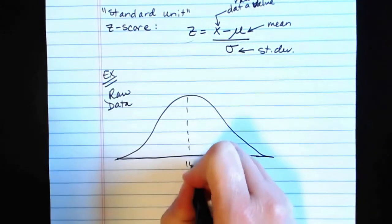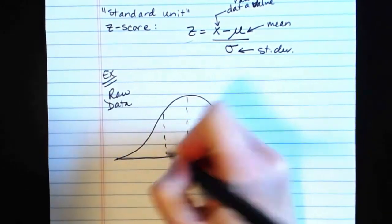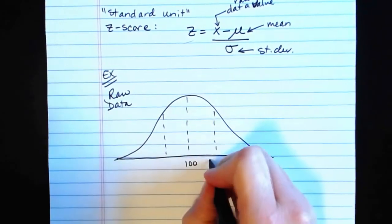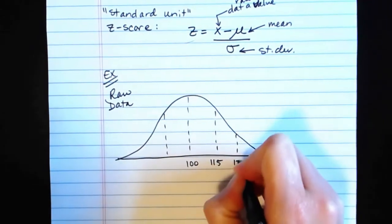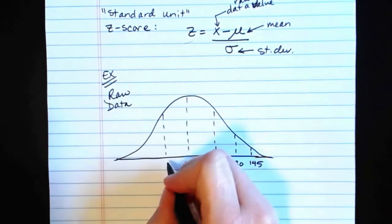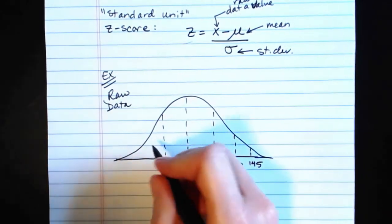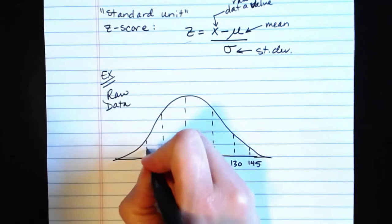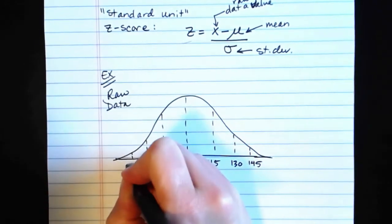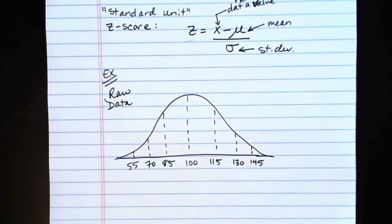So this normal curve would be centered at 100 and it had a standard deviation of 15. So this was 115, 130, 145. This was 100 minus 15 is 85, and then 70, and then 55. Okay, so that was the raw data.